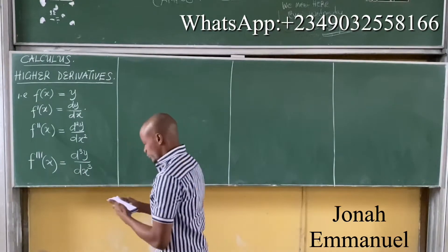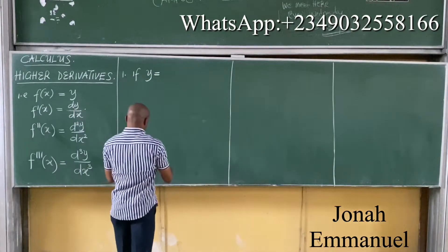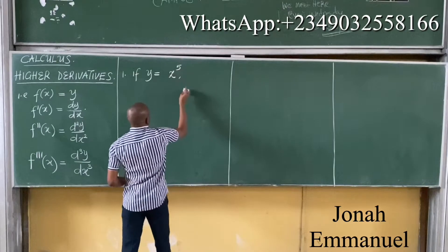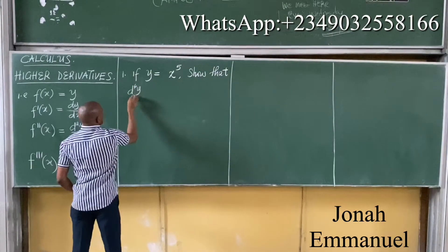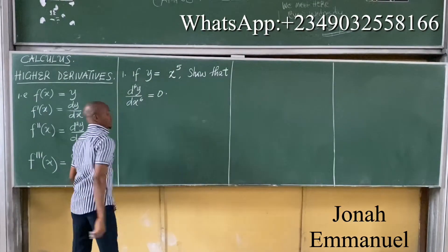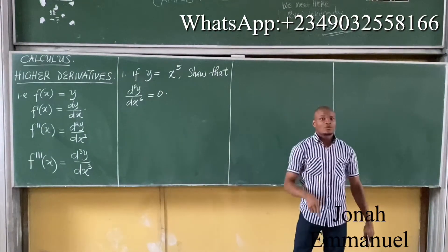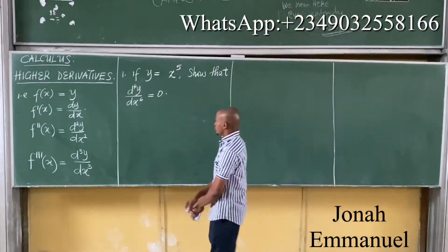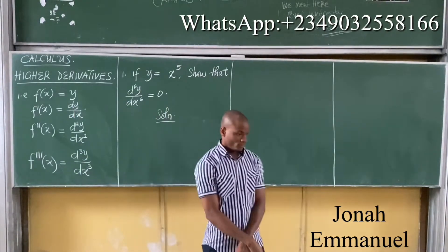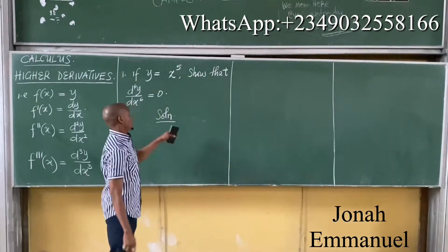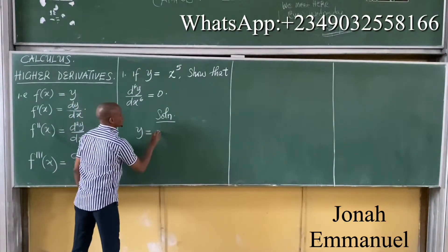Example number 1: If y equals x to the power 5, show that d⁶y over dx⁶ is equal to 0. So the question asks: if y equals x to the power 5, show that the sixth derivative is equal to 0. We need to differentiate how many times? Six times.